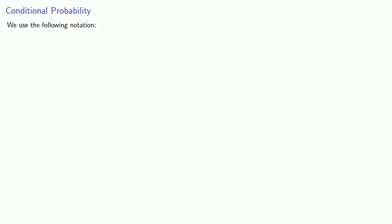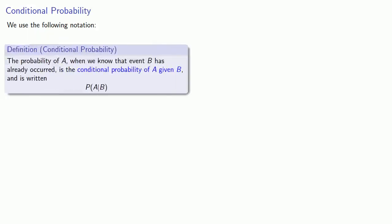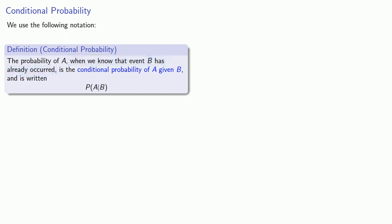We'll introduce the following notation. The probability of an event A, when we know that event B has already occurred, is the conditional probability of A given B, and is written as the probability of A bar B.